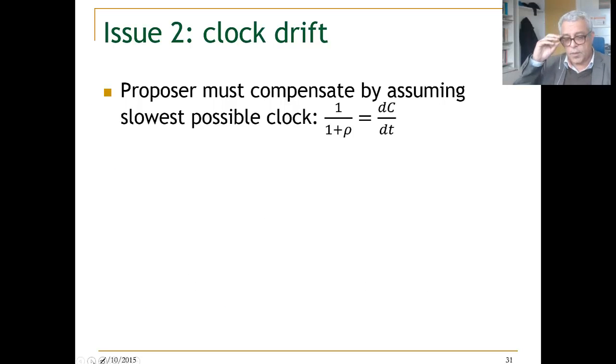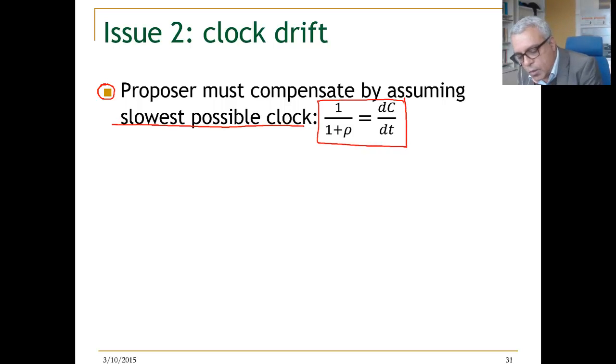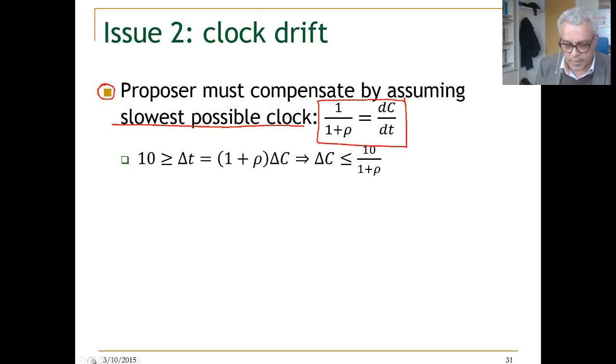The proposer must compensate by assuming the slowest possible clock rate. So he assumes this bound that his clock is going slowly. He has to assume that so that he can compensate for the error.